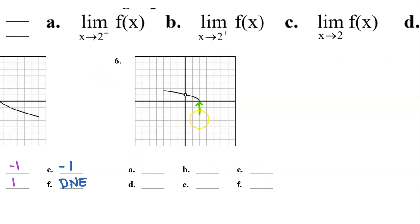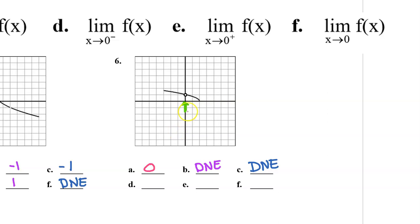Problem number 6. What happens as x approaches 2? As x approaches 2 from the left we are approaching a y value of 0. We cannot discuss what happens as x approaches 2 from the right because the function is not defined to the right of 2, so the right-sided limit does not exist. Therefore the overall limit cannot exist. What happens as x approaches 0? As x approaches 0 from the left the y values get closer and closer to 1. As x approaches 0 from the right the y value gets closer and closer to 1. Because the limit from the left is 1 and the limit from the right is 1, the overall limit as x approaches 0 is also 1.